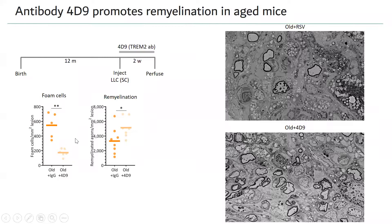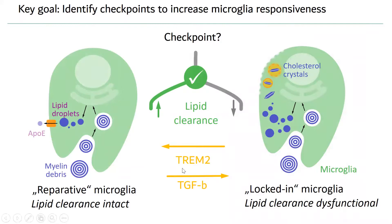To summarize: there are two checkpoints — TGF-beta signaling, specific to obesity, and TREM2, more general and important also in aging. Moving to TREM2 knockout mice: Marco Colonna and Laura Piccio had shown that TREM2 knockout mice are impaired in remyelination in the cuprizone model, and we nicely reproduced this data.